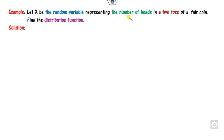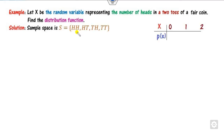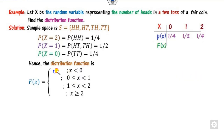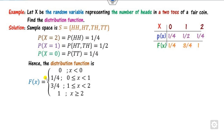Similarly, for the second question, representing the number of heads in tossing 2 coins, the number of heads can be 0, 1, or 2, and the corresponding probabilities are defined accordingly. In this case, the values are 0, 1, and 2, giving 4 intervals. The first value is always 0 and the last value is always 1. You can take the intermediate values as 1/4, then 1/4 + 2/4 = 3/4, and then 1 as the required CDF.